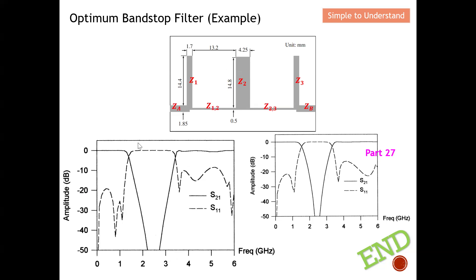Comparing the filter responses: the Part 27 design has a much gentler roll-off, while the Part 34 optimum design has a steeper roll-off factor, which is more desirable. You can clearly see the steeper skirt in the S21 response for Part 34 compared to Part 27. This optimum band stop filter is therefore more desirable. Thank you so much for your support — please like and subscribe, and I hope to see you soon.